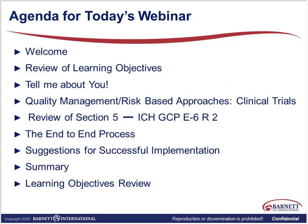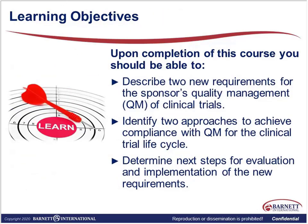For today's session, we'll talk about the learning objectives. I want to know a little bit about your background and your reasons for attending. We will talk about quality management risk-based approaches in clinical trials. We'll review ICH GCP E6 Revision 2, focusing on sponsor responsibilities and the risk management section, the end-to-end process for how we identify what we need to focus on in our studies, and a few suggestions for successful implementation. Today we will be here for approximately two hours. Our learning objectives: to describe two new requirements for the sponsor's quality management of clinical trials; to identify two approaches to achieve compliance with quality management for the clinical trial lifecycle; and to determine next steps for evaluation and implementation of the new requirements.